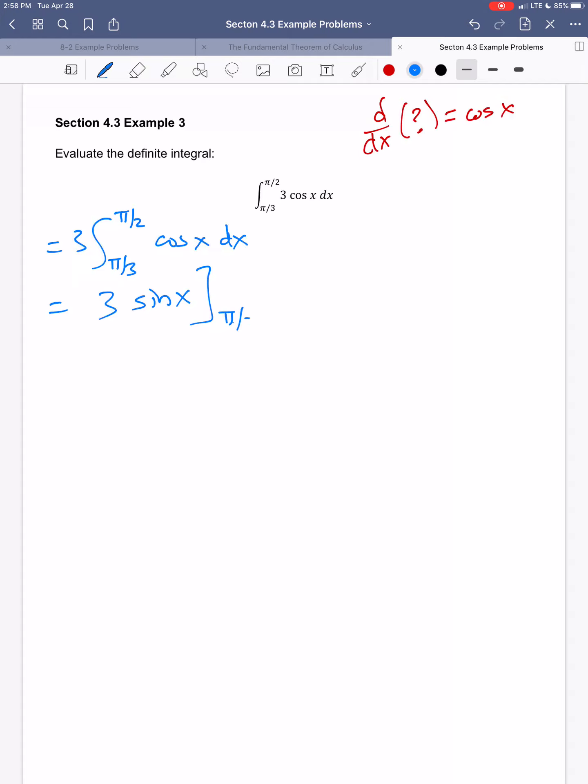So I want to evaluate that from pi over 3 to pi over 2. So the 3 can be factored out. It's going to be part of both terms. So I get 3 times the sine of pi over 2 minus the sine of pi over 3.